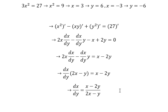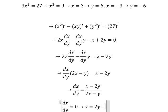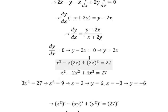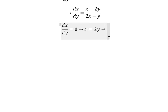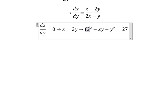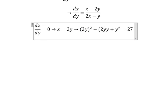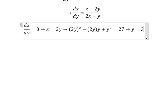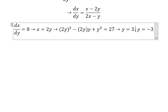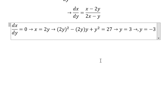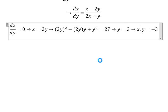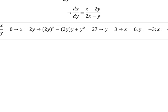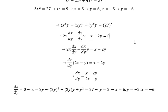Setting this equal to zero, we get x minus 2y equals zero. Solving the same way, y equals 3 and y equals negative 3. Substituting back, x equals 6 and x equals negative 6. This is the technique — thank you for watching.